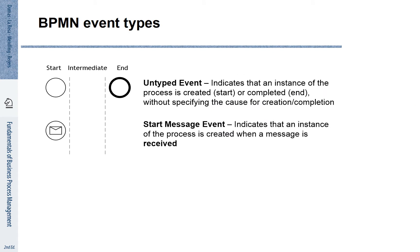We have already seen that BPMN supports start and end events. The circles indicate the corresponding start of a process and the end of the process. There are more specific types of events. We can represent with a little envelope that a start message event is what triggers the process. In this case, receiving a message from a supplier or customer starts the process. This can be used to represent, for example, that a purchase order is received.